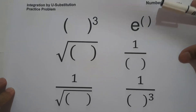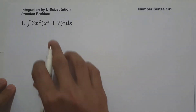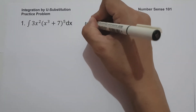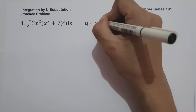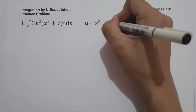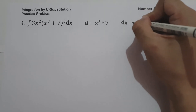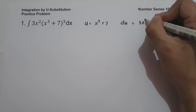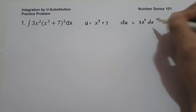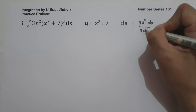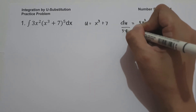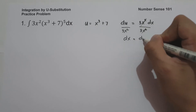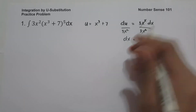In our given number 1, we have x cubed plus 7 raised to a certain exponent. Therefore, the value of u is x cubed plus 7. And du is the derivative of x cubed plus 7, which is 3x squared dx. Let us divide both sides by 3x squared, so dx equals du over 3x squared.